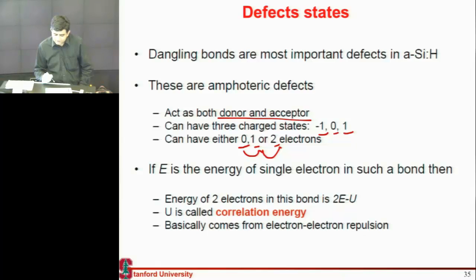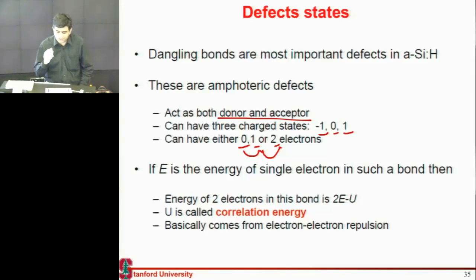All of these are things that are very difficult to represent in a band structure. Because in a band structure, usually you have one state holding one electron — versus now I have these kind of defects in amorphous material which can hold more than one electron.